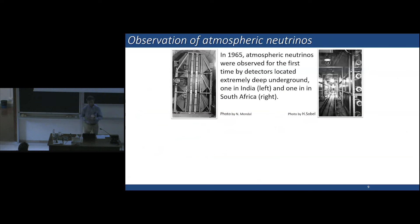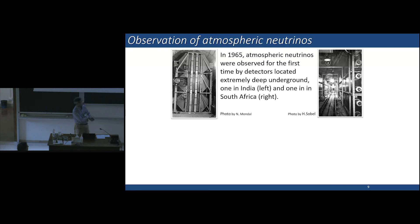The first observation of atmospheric neutrinos was carried out by two independent experiments. One was carried out in India and another in South Africa. In 1965, these experiments observed atmospheric neutrinos for the first time. I want to mention these experiments were carried out in extremely deep underground; in particular, the South Africa experiment was approximately 3 kilometers deep.